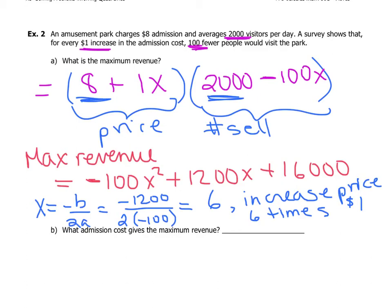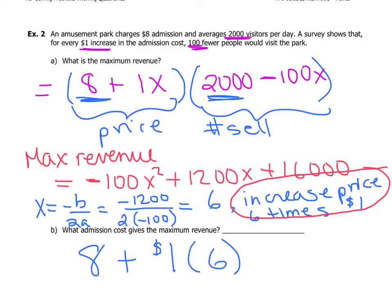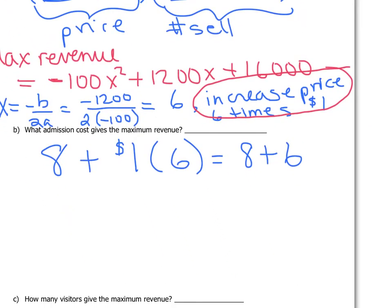The x-value of the vertex is six, meaning we increase the price six times by one dollar each. Admission now costs eight plus one times six — eight plus six — which is fourteen dollars.